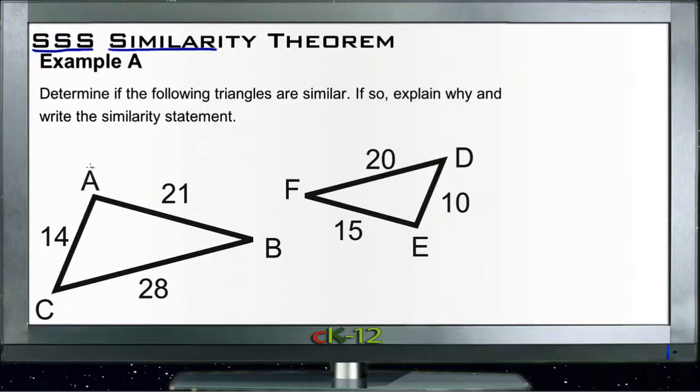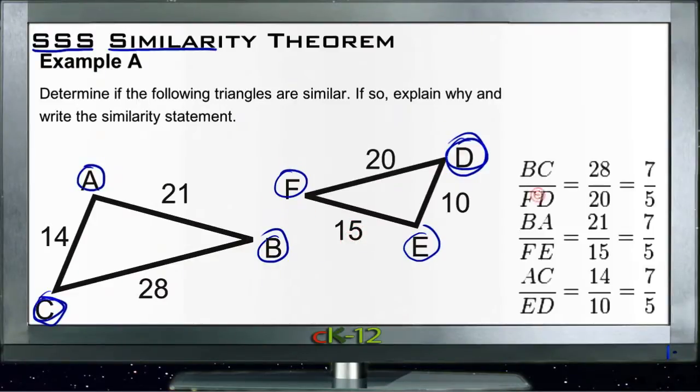What we'll do is take, for instance, side AC here and get my target cursor so it's easier for you guys to see, side AC and see if it corresponds to ED in the same way that BC corresponds to FD. In other words, we're going to compare the two short sides and then compare the two longest sides and see if they're in the same ratio, and then finally we'll compare the two medium sides.